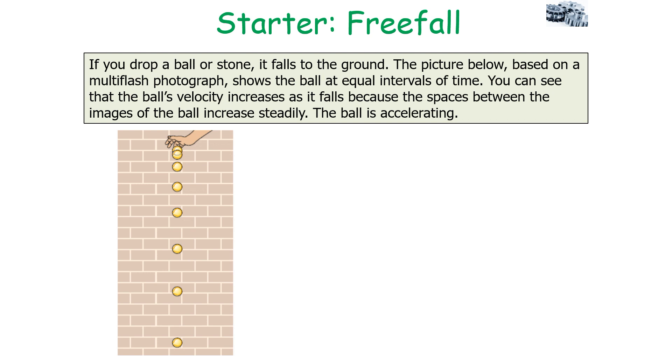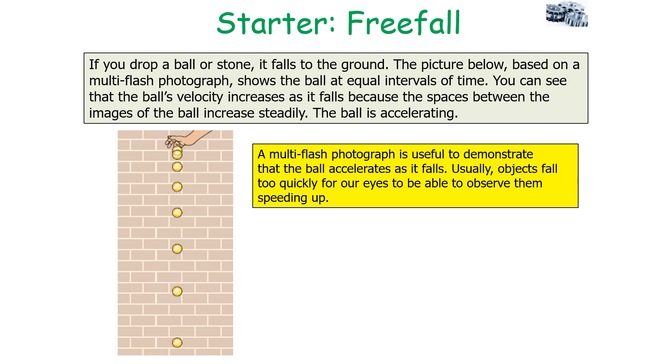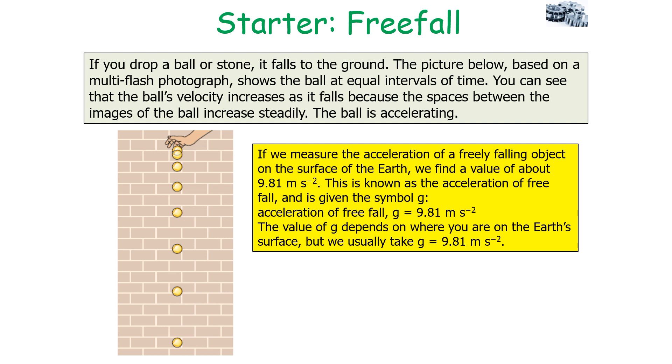Interestingly, if you drop a ball or stone, it will fall to the ground. The picture below, based on multi-flash photography, shows the ball at equal intervals of time. You can see that the ball's velocity increases as it falls because the spaces between the images of the ball increase steadily, indicating the ball is accelerating. Multi-flash photography is useful to demonstrate that the ball accelerates as it falls, as usually objects fall too quickly for our eyes to observe them speeding up. If we measure the acceleration of a freefalling object on the surface of the Earth, we find that the value is about 9.81 m/s², which is the known value of acceleration due to gravity, given the symbol g.